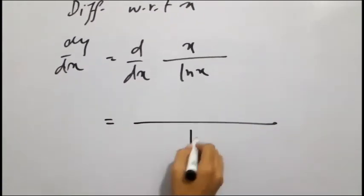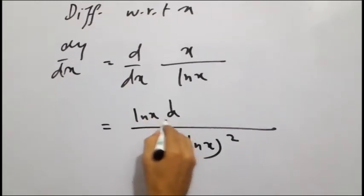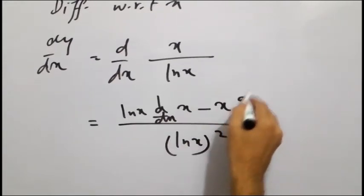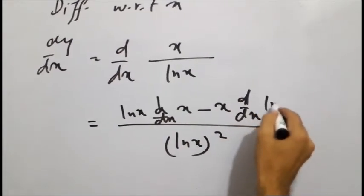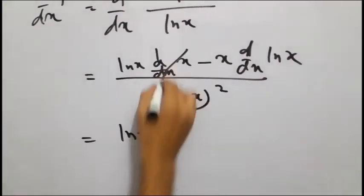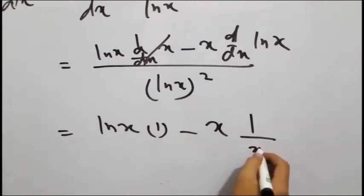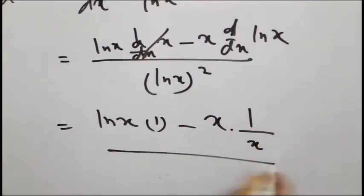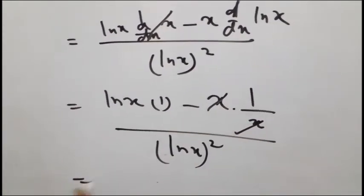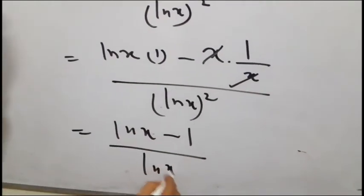नीचे वाली value का square नीचे आएगा। नीचे वाली value का derivative one आएगा, center में minus, यह x वैसे ही आएगा। natural log of x का derivative one over x आता है। और बटे में natural log of x square आएगा — यह cancel हो जाएगा और ऊपर आएगा natural log of x minus one, over natural log of x का square।